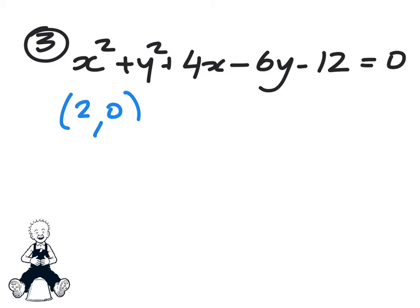Question 3. We've got a circle and we've got a point. Now, if this point is to lie in the circumference, that means that we can substitute